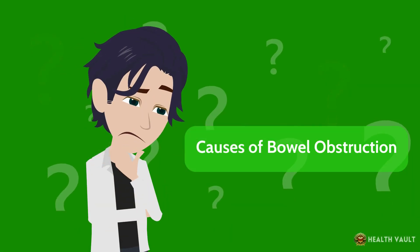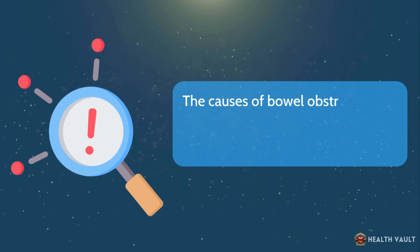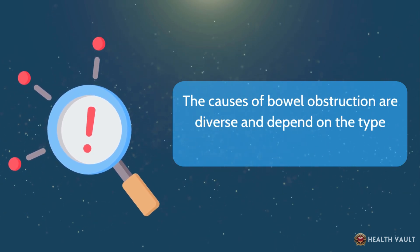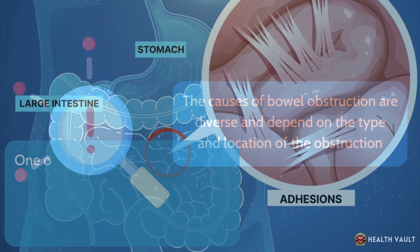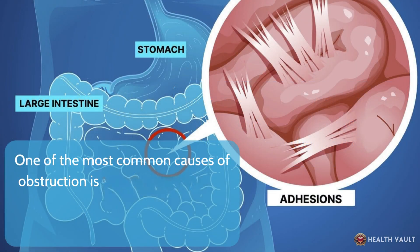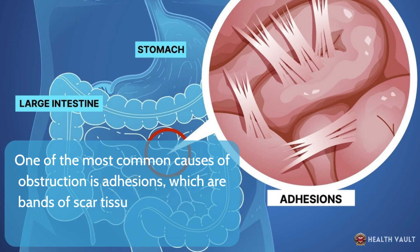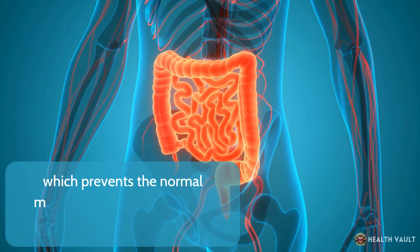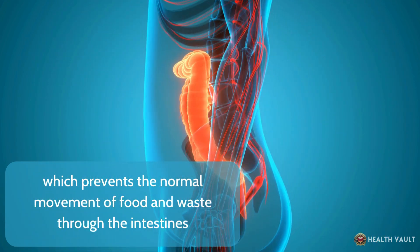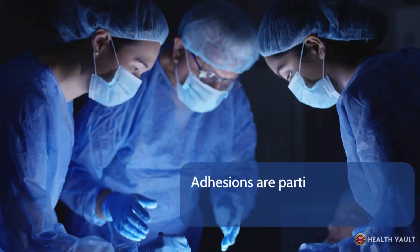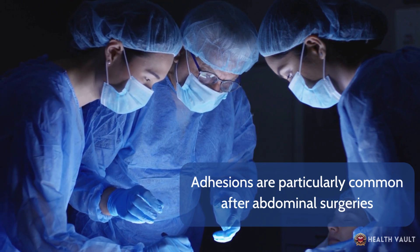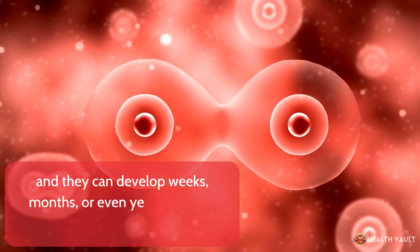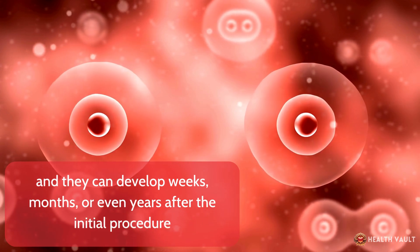The causes of bowel obstruction are diverse and depend on the type and location of the obstruction. One of the most common causes is adhesions — bands of scar tissue that form after surgery — which can pull or twist the intestine, creating a physical barrier that prevents normal movement of food and waste. Adhesions are particularly common after abdominal surgeries and can develop weeks, months, or even years after the initial procedure.